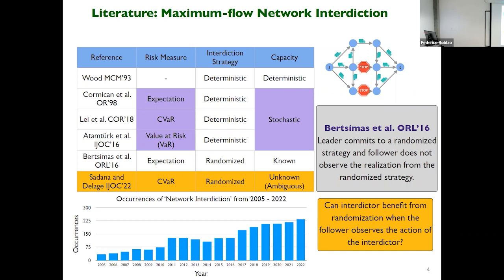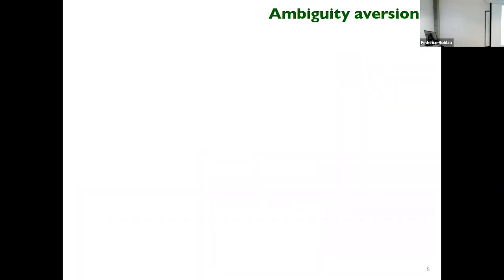You can see that network interdiction is a hot topic, which can be seen by the occurrences of the keyword 'network interdiction' on Google Scholar from 2005 to 2022. From an ML perspective this might not be a hot topic, but in OR it is still considered a hot topic. Before we go to the model, we need to understand two things: ambiguity aversion and risk aversion.